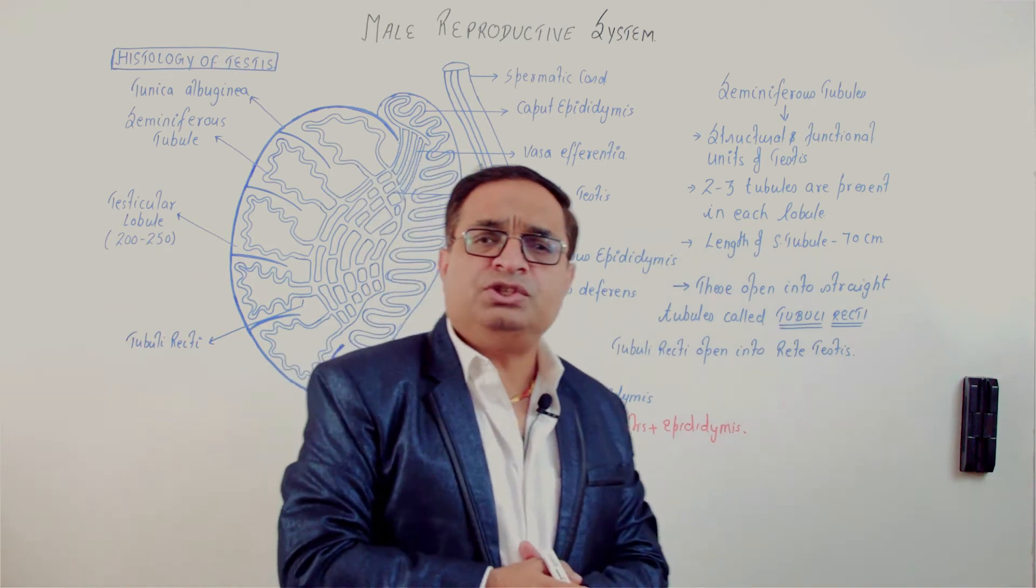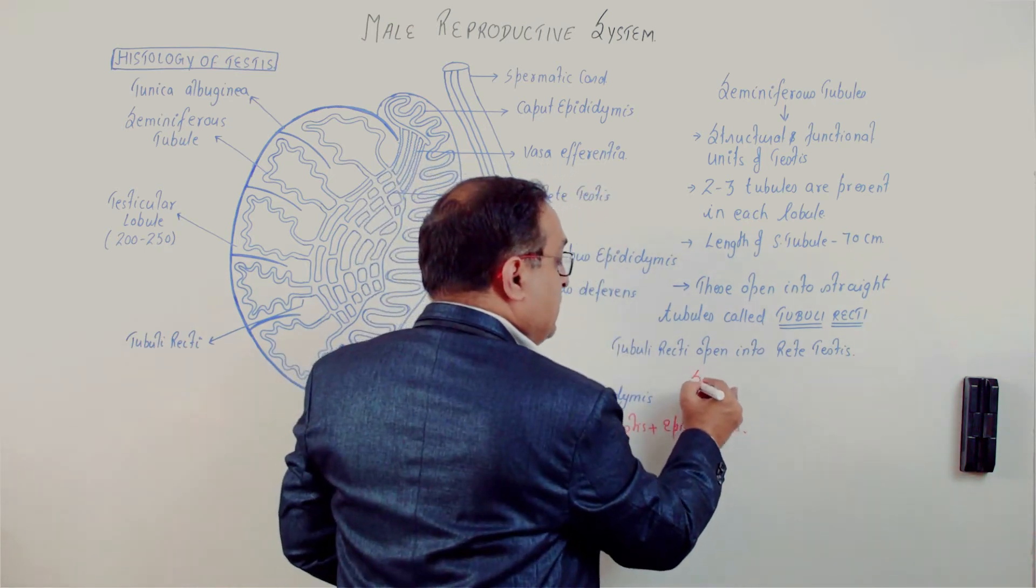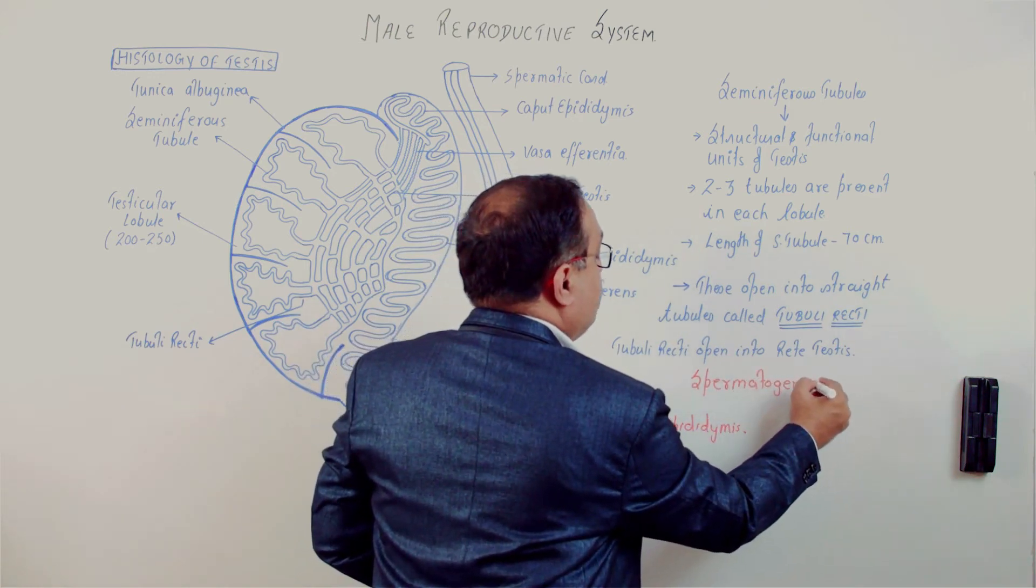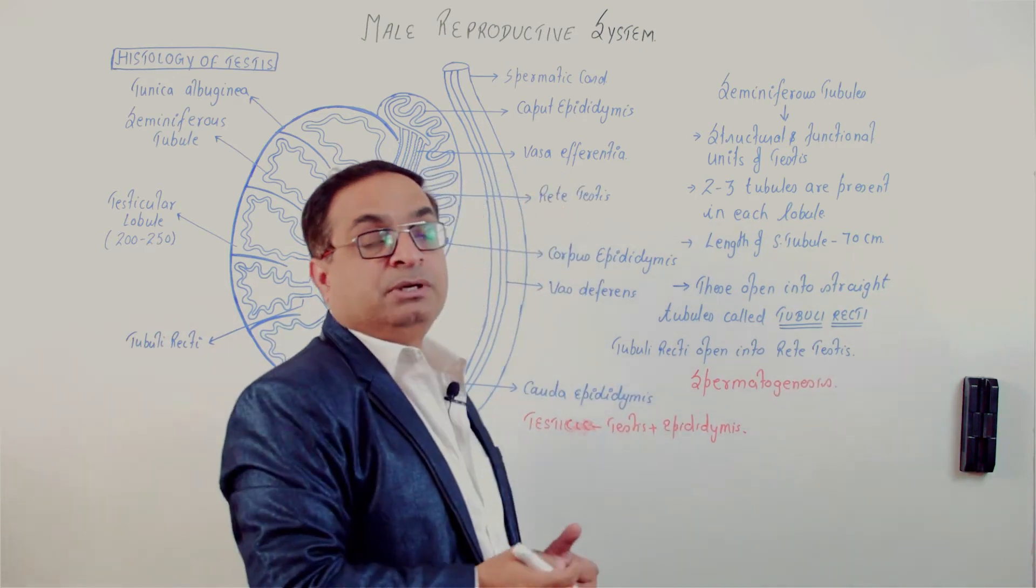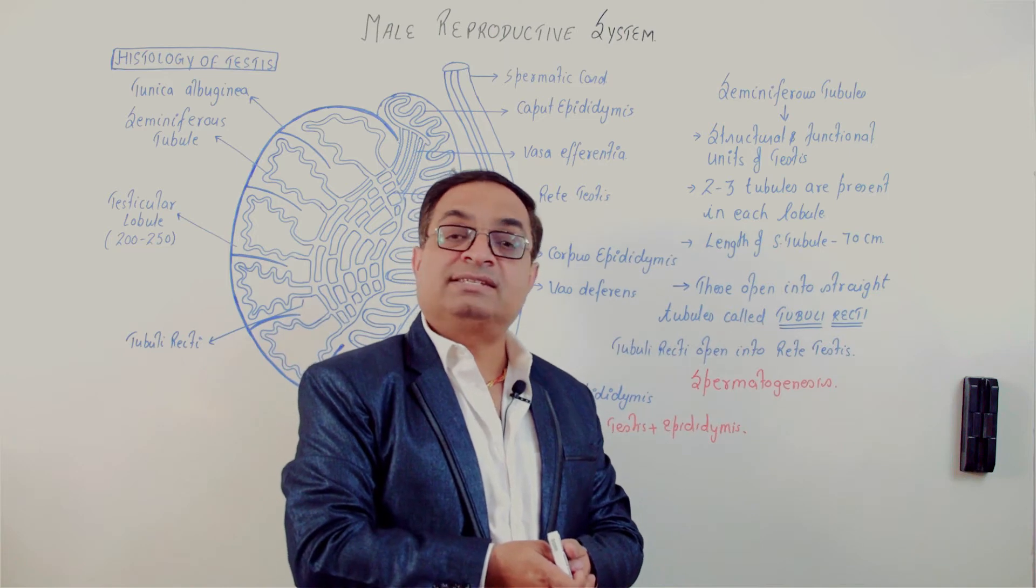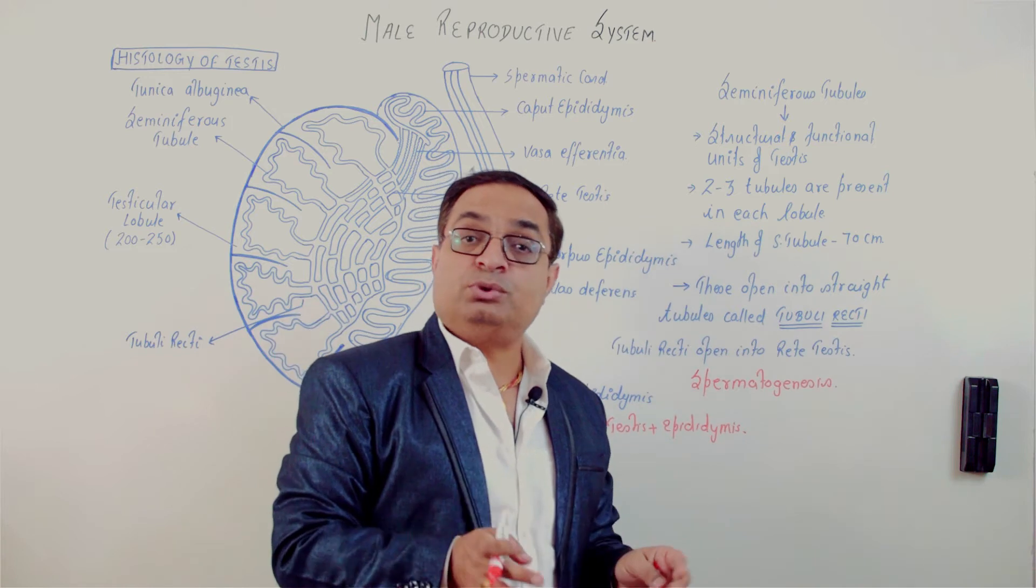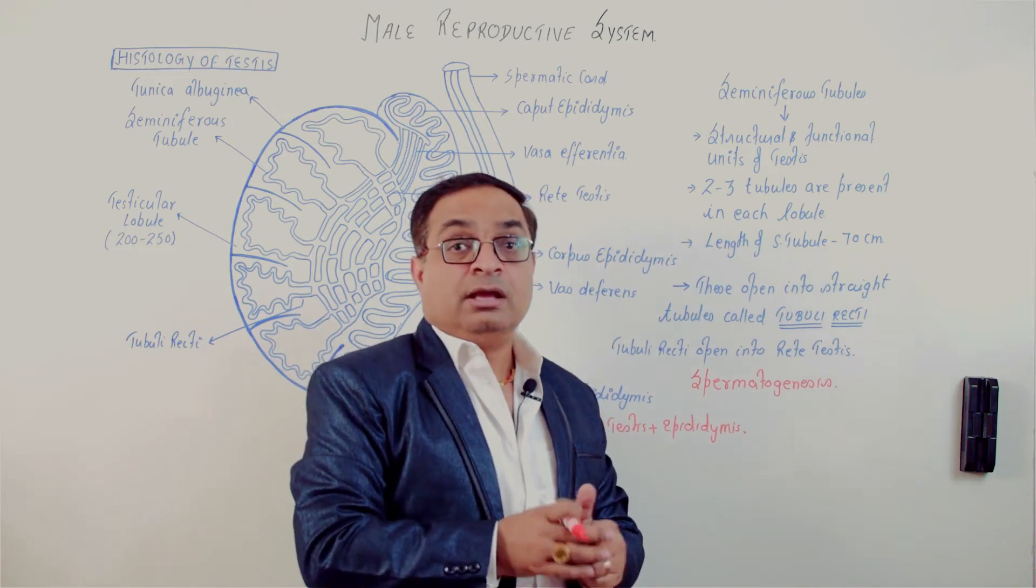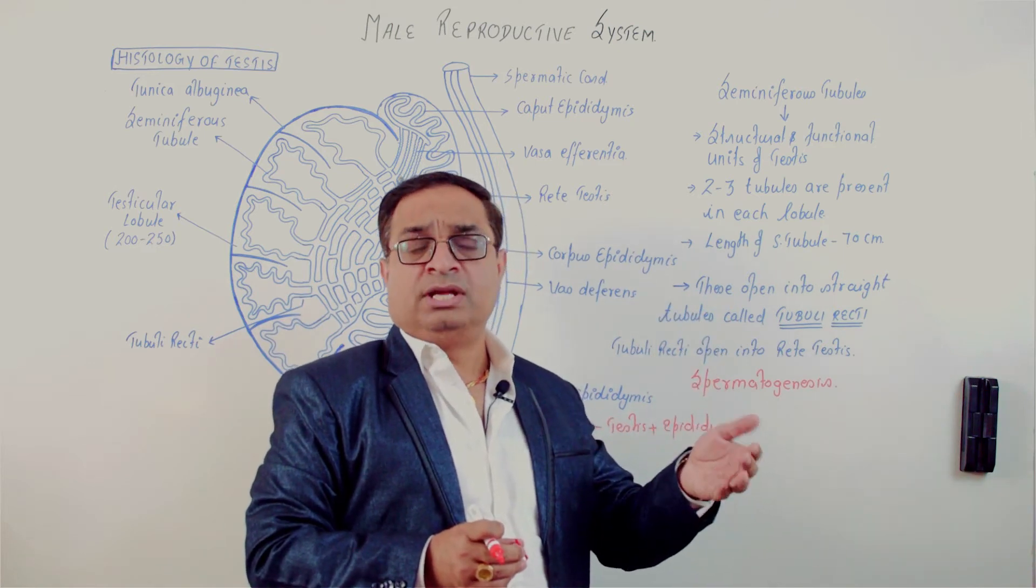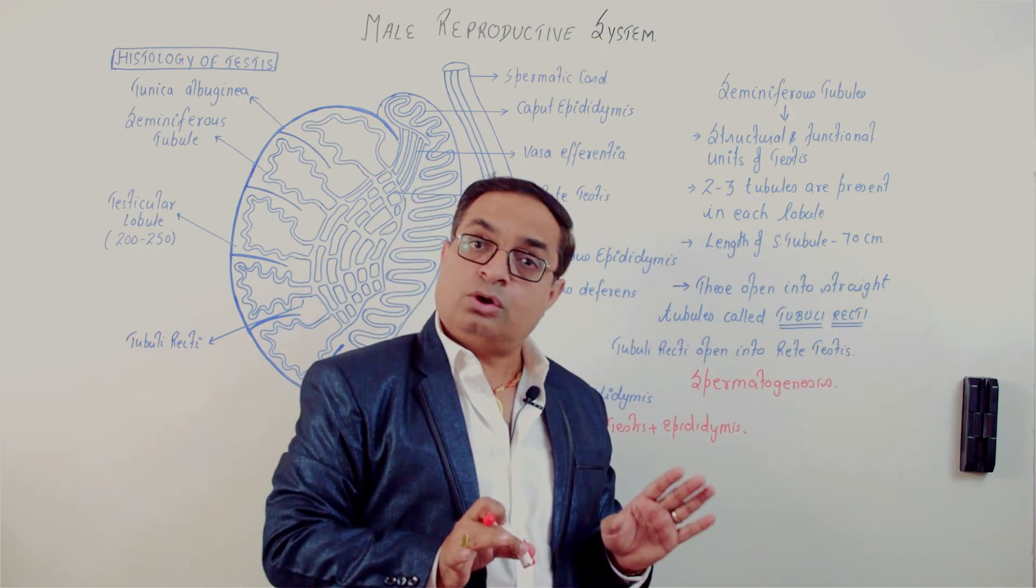Sperms are produced continuously in the testes by the process called spermatogenesis. Spermatogenesis is the process of formation of male gametes, that is sperms. It begins during puberty and once it starts, it continues till death. That means a male continues producing sperms till his death. With advancing age there is decrease in sperm count and in the number of healthy sperms produced, but sperm production continues.